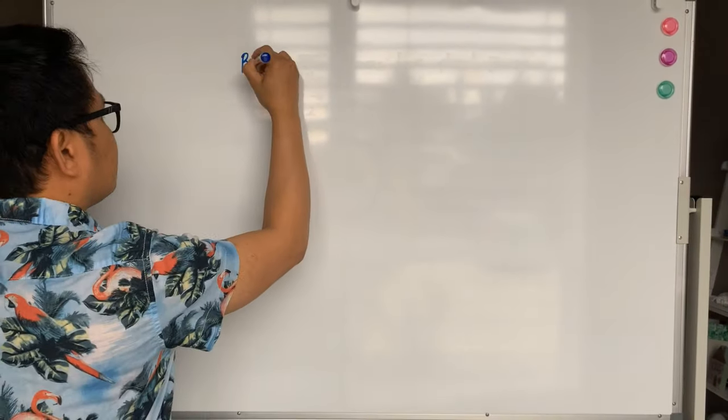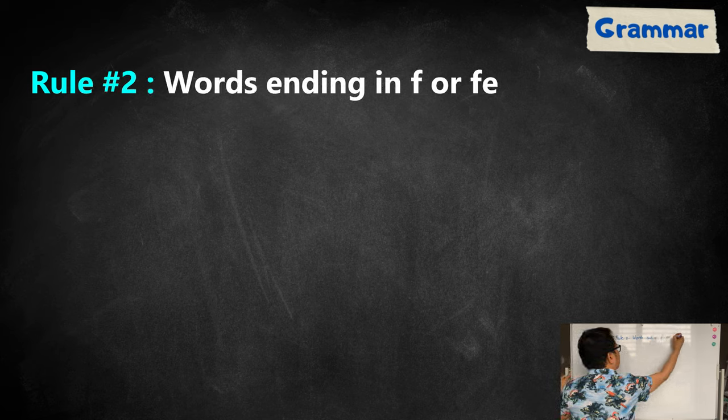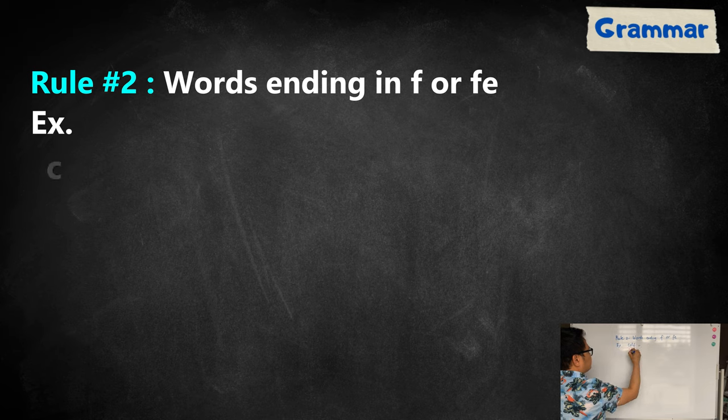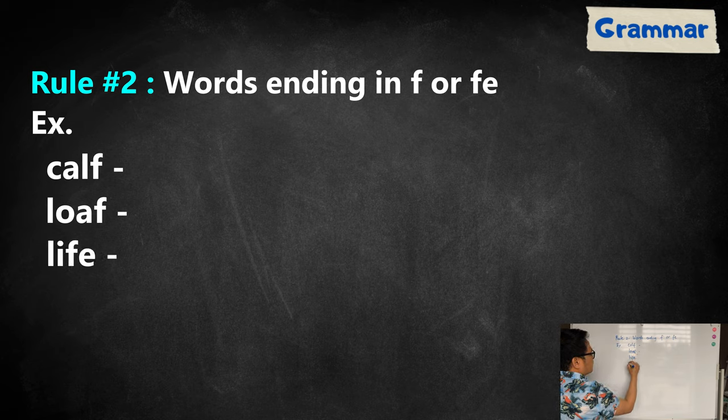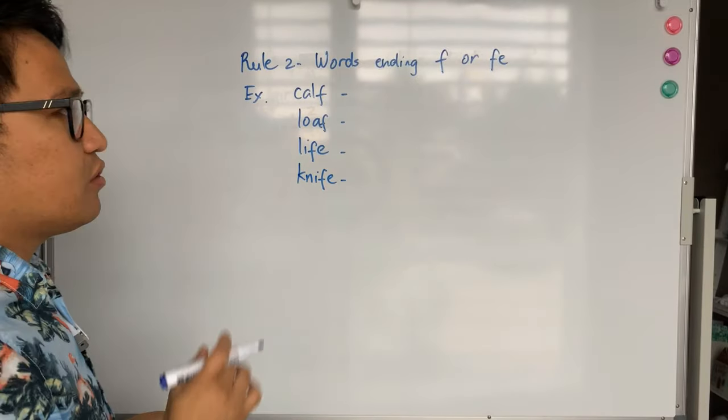Second rule is words ending in F or F-E. For example, calf, loaf, while F-E, life, and knife. To make these words plural, you have to consider things.